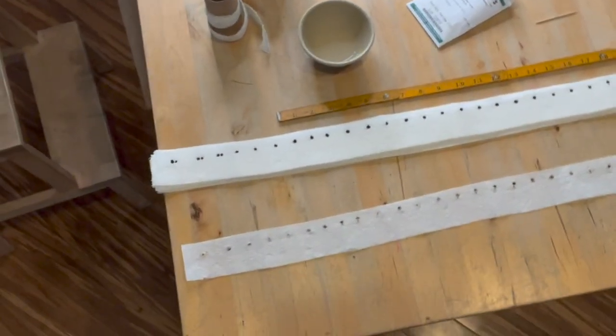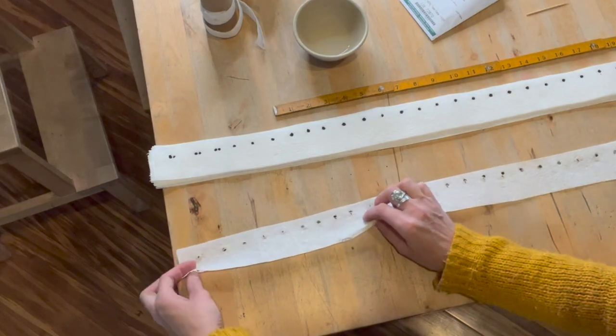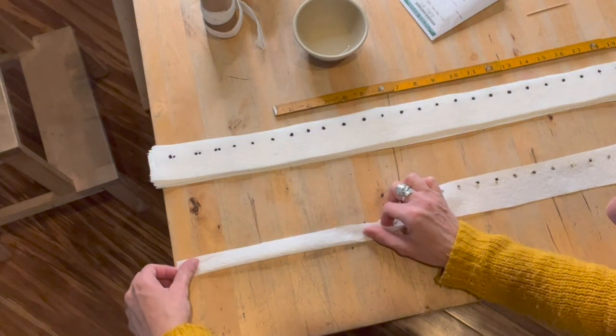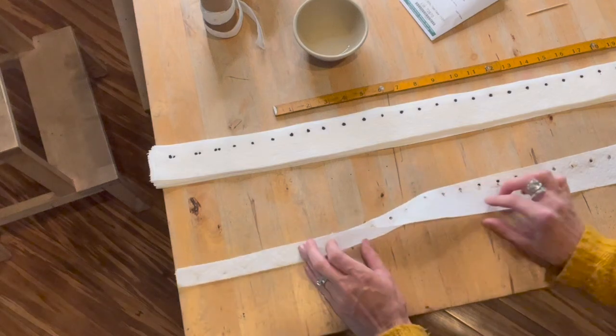Once we get all of our seeds put on our tape, then we're just going to simply fold it in half and let the glue stick to the other side.